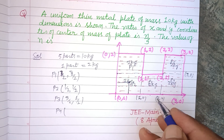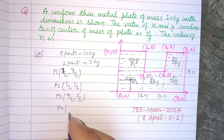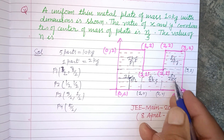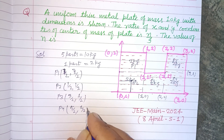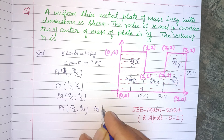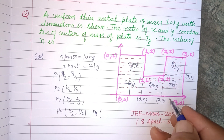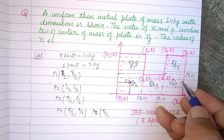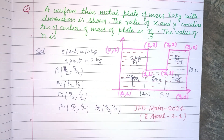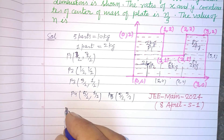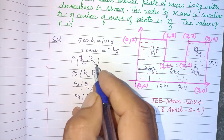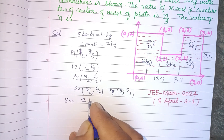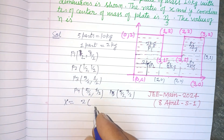P4 is (5/2, 1/2) and P5 is (5/2, 3/2). Now for the coordinate of the center of mass — since all parts have equal mass of 2 kg, we simply add the x-coordinates.